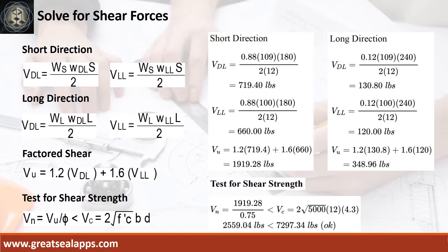At short direction, the shear force from dead load is 719.4 pounds, the shear force from live load is 660 pounds, for a maximum shear force of 1,919.28 pounds. At long direction, the shear force from dead load is 130.8 pounds, the shear force from live load is 120 pounds, for a maximum shear force of 348.96 pounds. The nominal shear force is 2,559.04 pounds, less than 7,297.34 pounds.